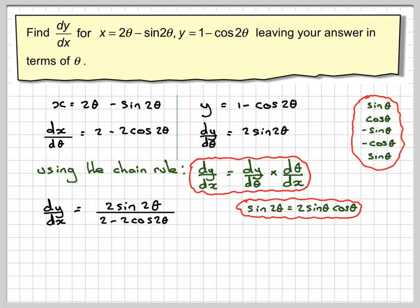this is going to be, so that becomes 2 times 2 sine theta cos theta. And then for this one, cos 2 theta, because there's three identities for cos 2 theta, the one we want is 1 minus 2 sine squared theta.